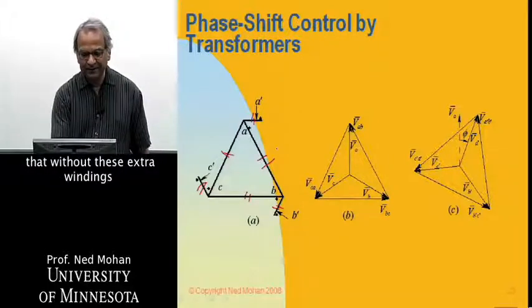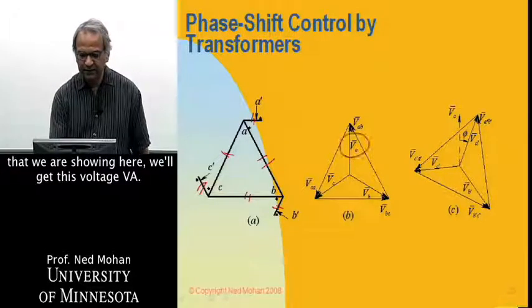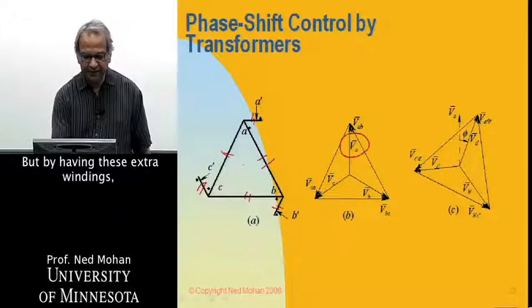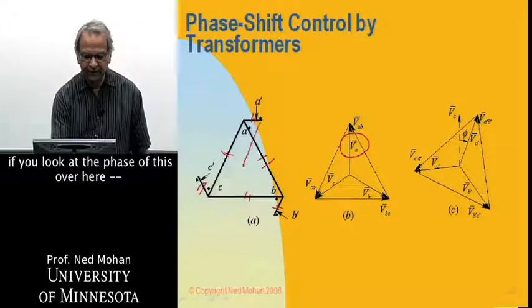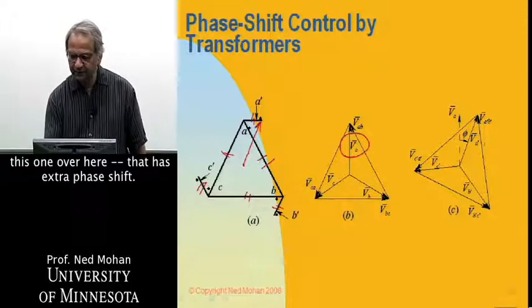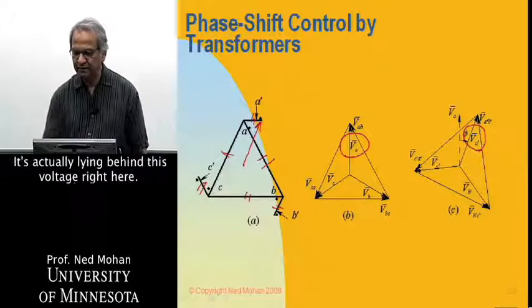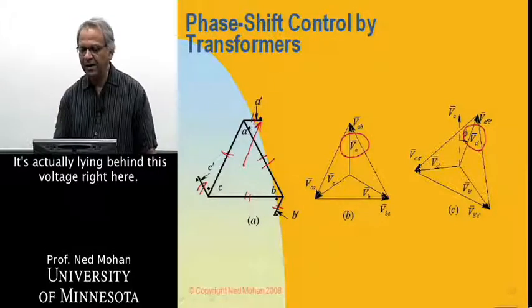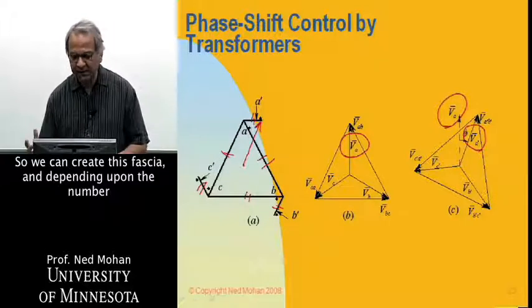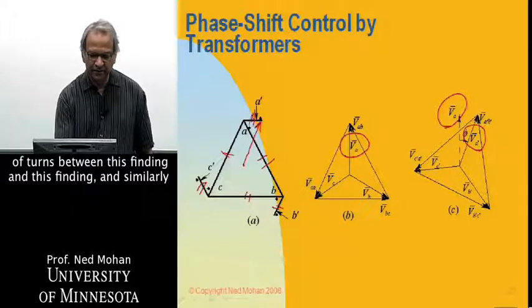So in this case, what we see here is that without these extra windings that we are showing here, we will get this voltage, VA. But by having these extra windings, if you look at the phase of this over here, this one over here, that has extra phase shift. It's actually lagging behind this voltage right here.